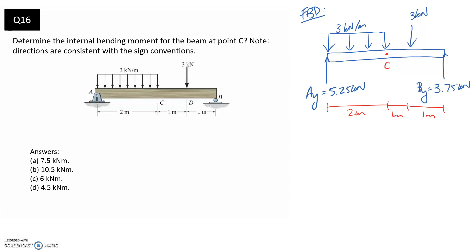What we need to do is take a cut through the beam at our point of interest, at point C. We're going to cut and have to redraw either the left or the right hand side of the beam. I'm going to draw the right hand side, but it doesn't really matter.